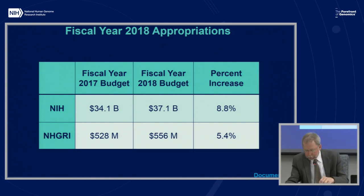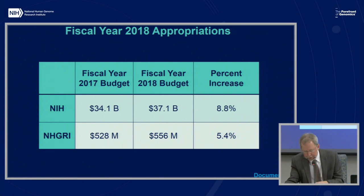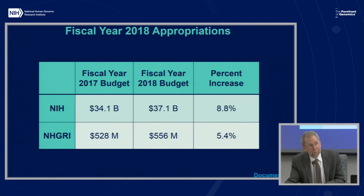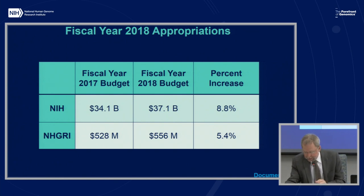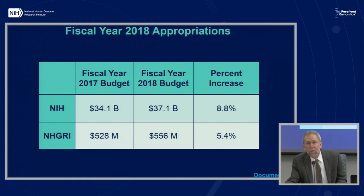In March, President Trump signed the fiscal year 2018 omnibus appropriations bill into law, providing an 8.8% or $3 billion increase for NIH. Of this $3 billion, about $1.2 billion is set aside for specific areas including $414 million for Alzheimer's disease research, $500 million for opioids research, and $60 million for the All of Us research program. I am pleased that NHGRI received a 5.4% or $28.5 million increase, putting our fiscal year 2018 budget at $556 million. All of us at NHGRI are appreciative of the continued support of the U.S. Congress.